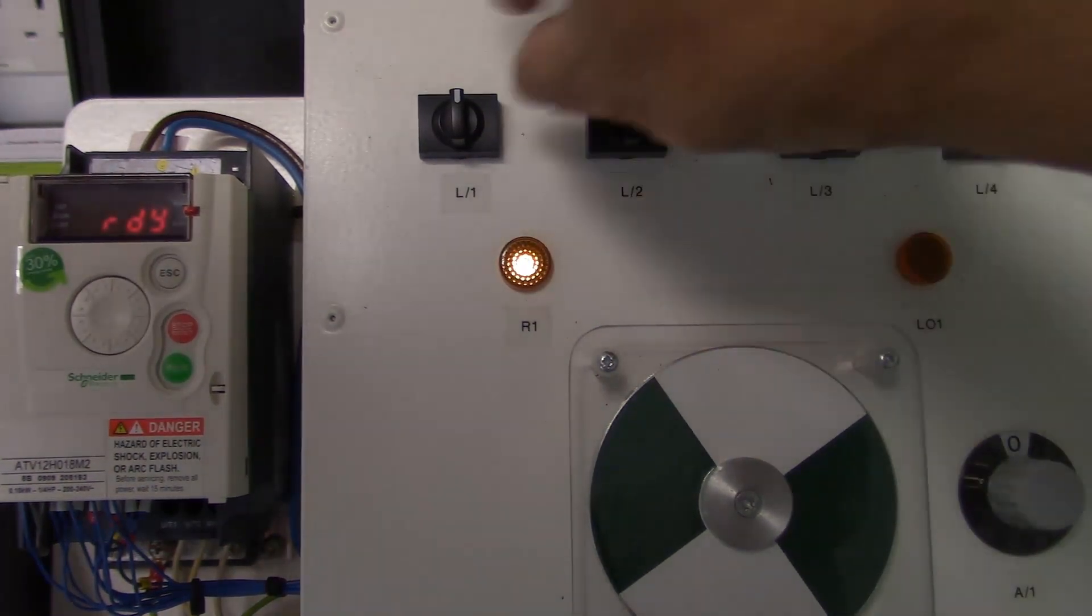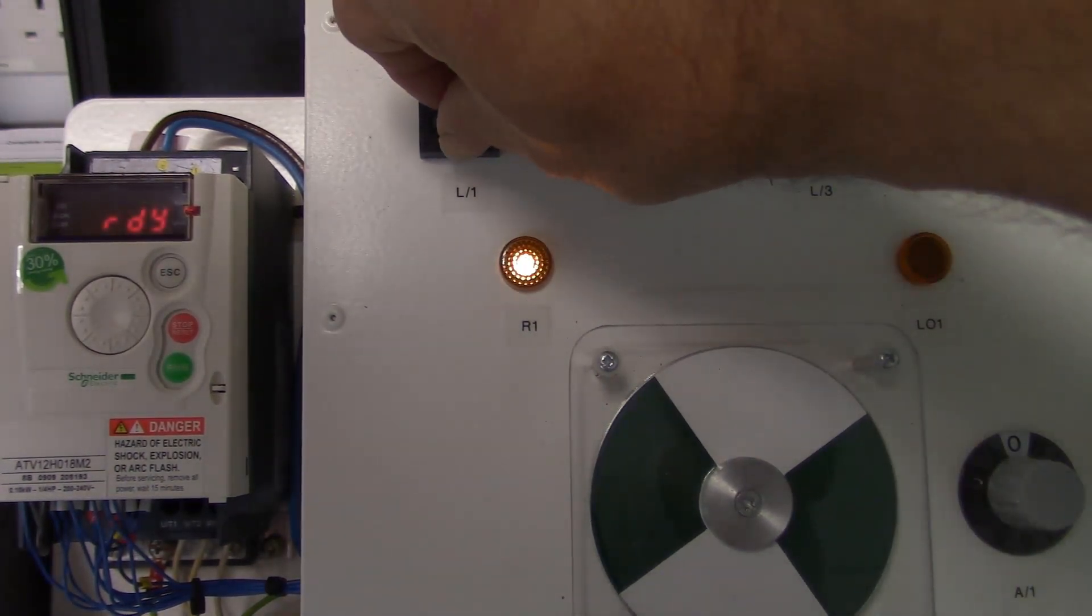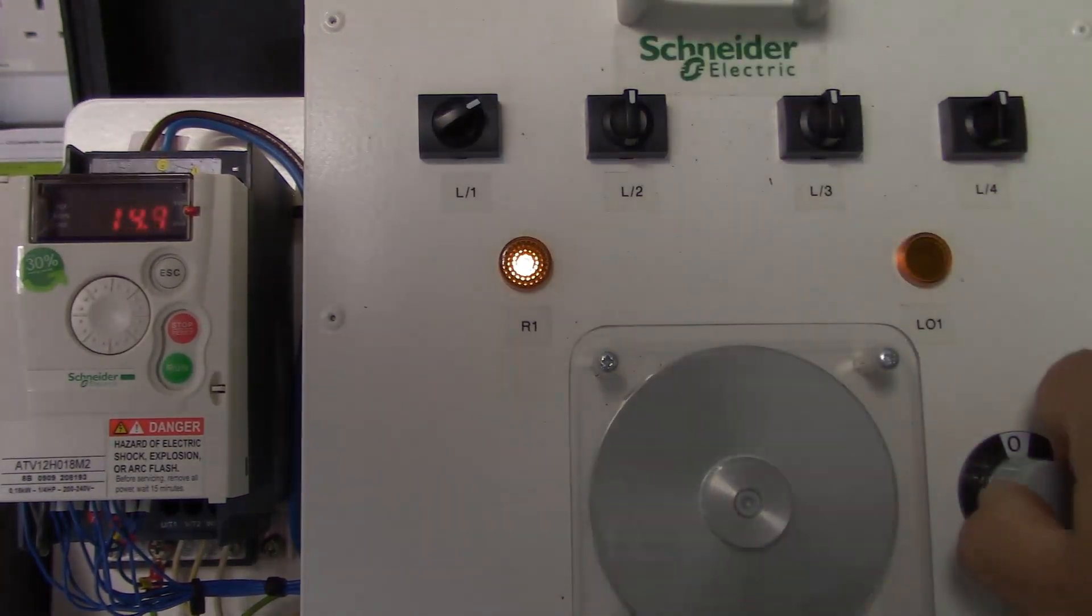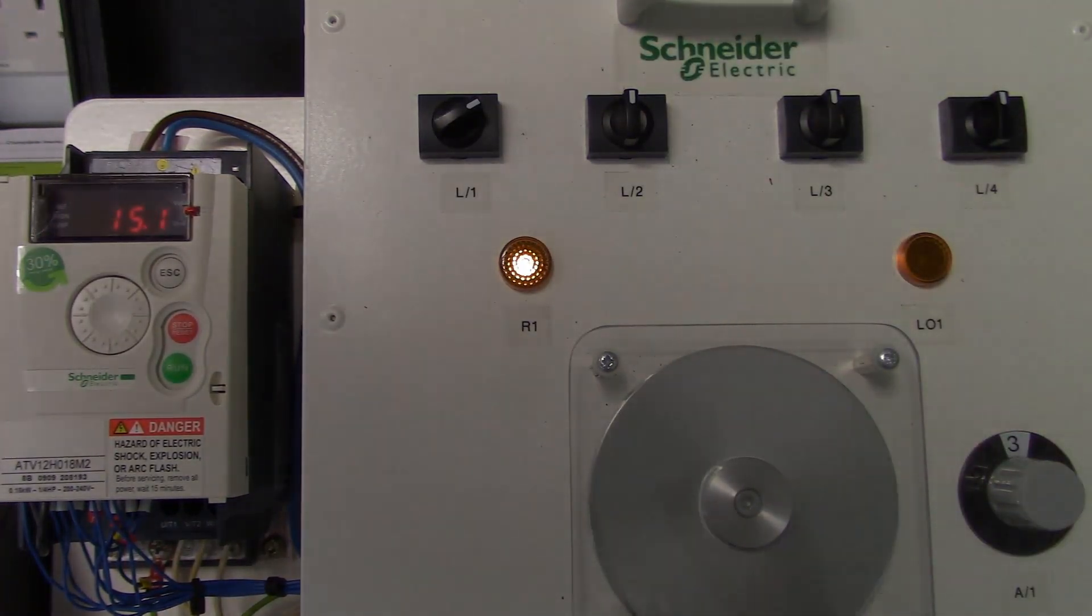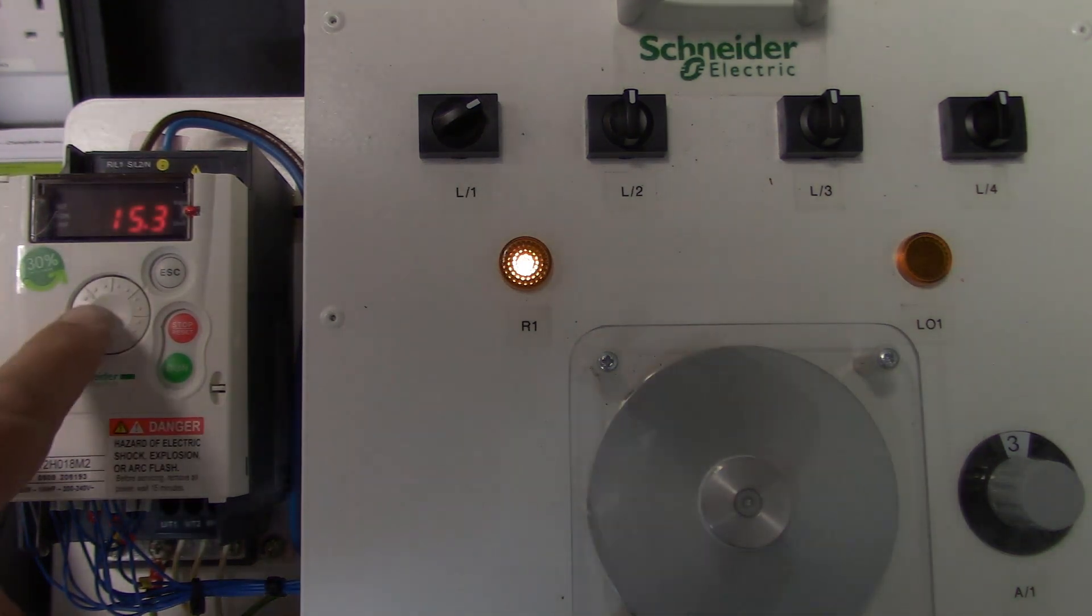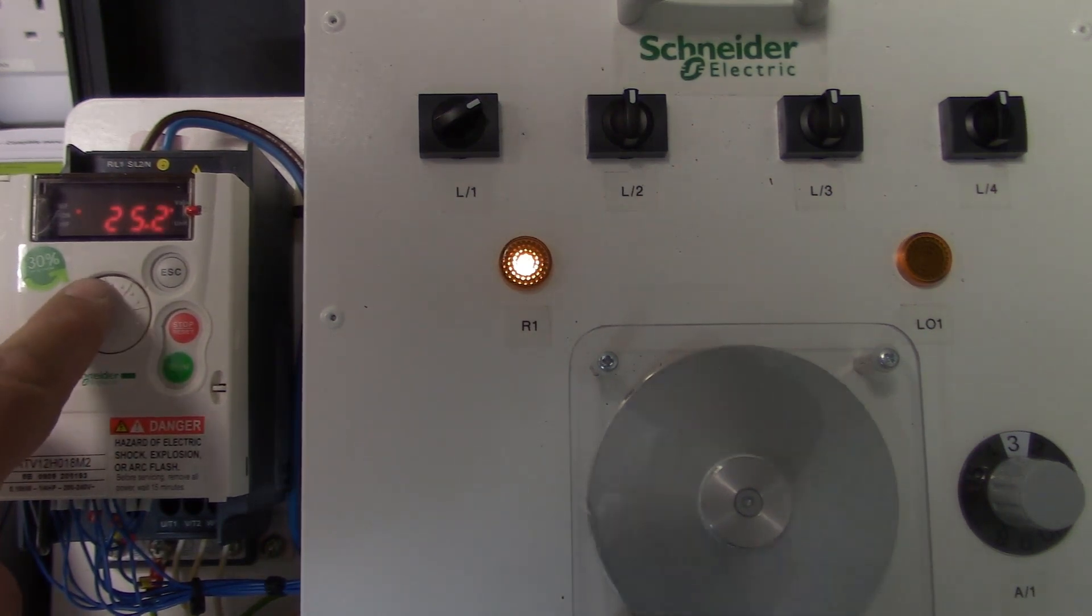If I go back to the PID control. As we have set the drive for A1U1 as the reference the set points required can be adjusted by using a dial set on the reference setting of the unit.